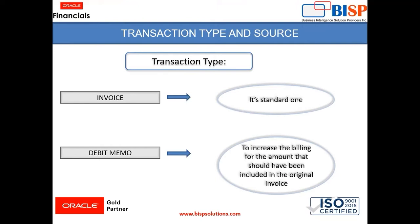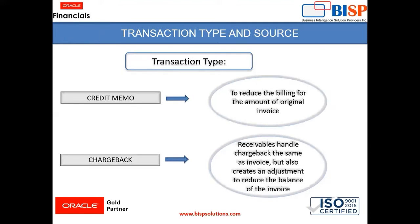The types are: invoice, which is a standard invoice created as a transaction type; then debit memo, which is used to increase the billing of the amount that should have been included in the original invoice; then credit memo, which is the opposite of the debit memo and helps reduce the billing amount of the original invoice; and chargeback, which receivable handles the same as an invoice but also creates an adjustment to reduce the balance of the invoice.